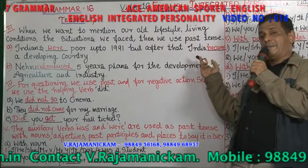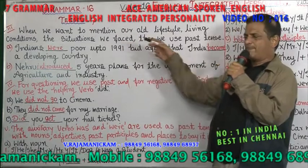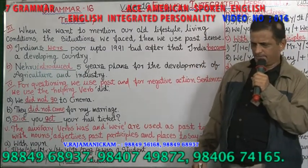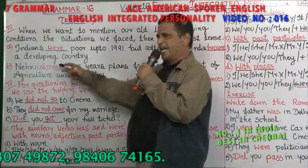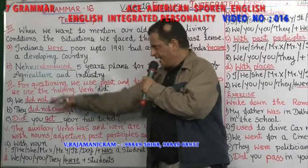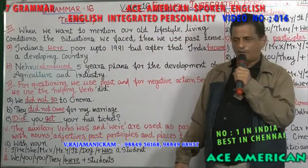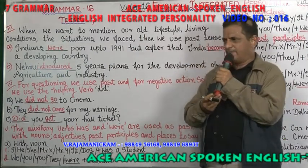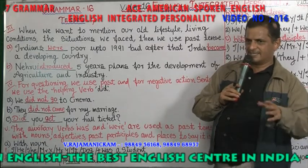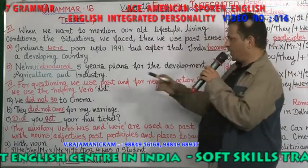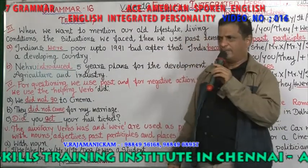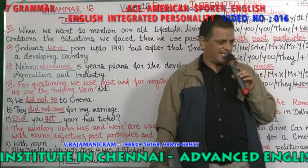After that, India became a developing country — 'became' is the past tense. When you want to mention difficulties you faced in the past, you use past tense. Nehru, the first Prime Minister of India from 1947 to 1964, introduced five-year plans. Each five-year plan concentrated on agriculture and industry. When you want to mention the past lifestyle and past habits, there you use past tense.